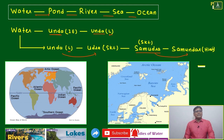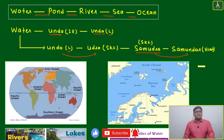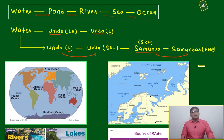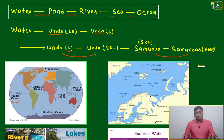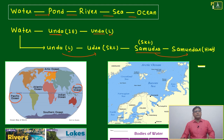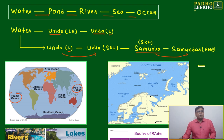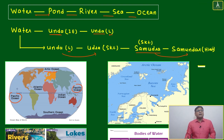The five oceans are: Arctic Ocean, Atlantic Ocean, Indian Ocean, Pacific Ocean, and Southern Ocean. Note that Pacific appears on both sides of the 2D map because the globe is actually 3D — when you wrap it around, it connects as one Pacific Ocean.